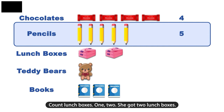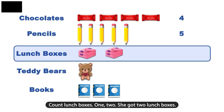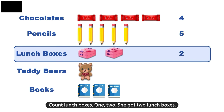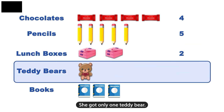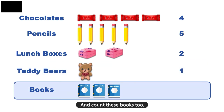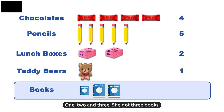Count lunch boxes: 1, 2. She got 2 lunch boxes. She got only 1 teddy bear. And count these books too: 1, 2 and 3. She got 3 books.